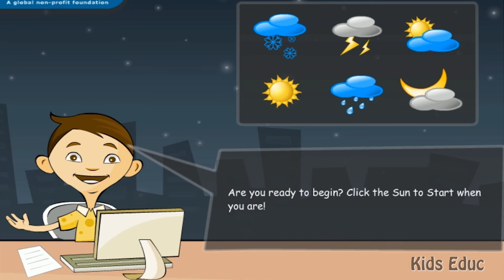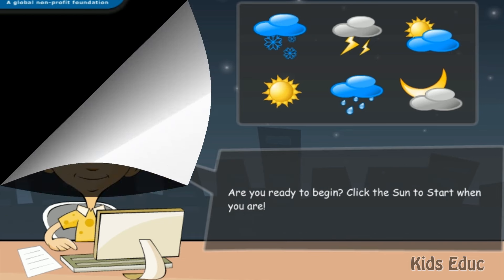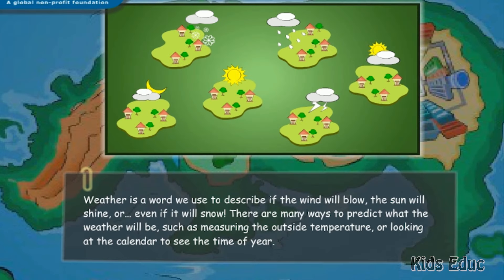Are you ready to begin? Weather is a word we use to describe if the wind will blow, the sun will shine, or if it will snow. There are many ways to predict what the weather will be, such as measuring the outside temperature or looking at the calendar to see the time of year.